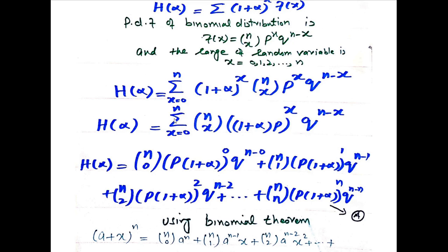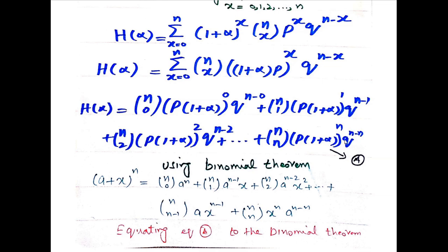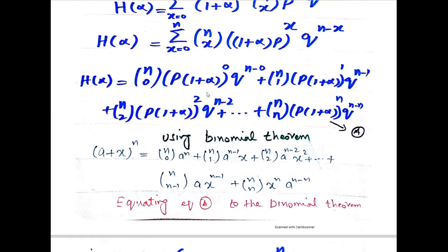Expanding the summation term by term: nC0 * [p(1+alpha)]^0 * q^n + nC1 * [p(1+alpha)]^1 * q^(n-1) + nC2 * [p(1+alpha)]^2 * q^(n-2) + ... + nCn * [p(1+alpha)]^n * q^0. This is equation (a). We now apply the binomial theorem to simplify this expression.